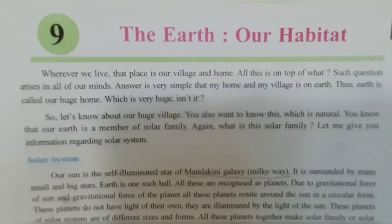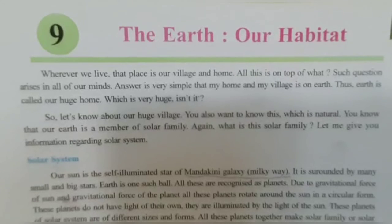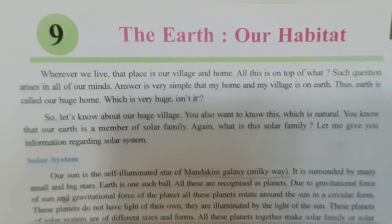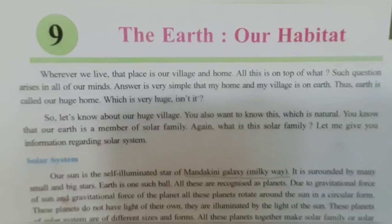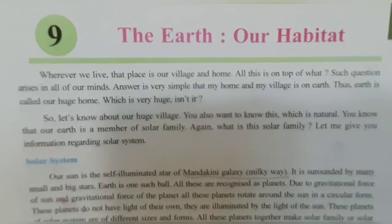Question number 4: Why are days and nights longer and shorter? The earth revolves around the sun with its axis inclined at 23.5 degrees, so the northern and southern hemispheres remain inclined towards the sun. Sun rays fall directly on the Tropic of Cancer on 21st June and on the Tropic of Capricorn on 22nd December. Where the sun rays fall directly and in adjacent areas, the days are longer and nights are shorter. Days and nights are of the same length on 21st March and 23rd September.